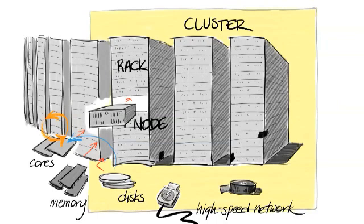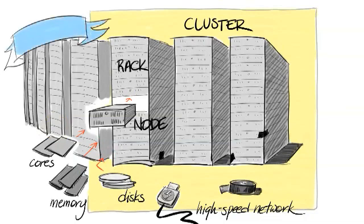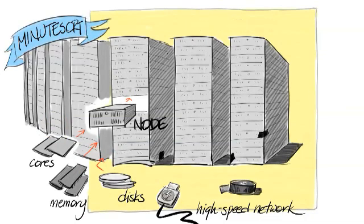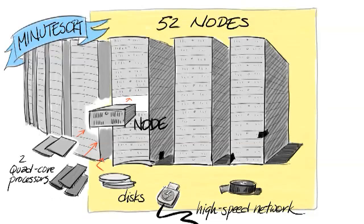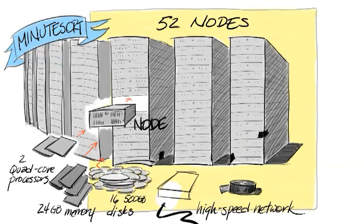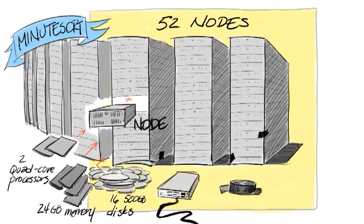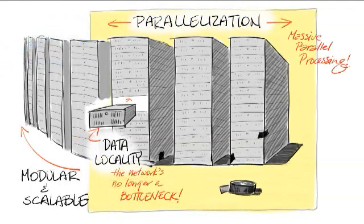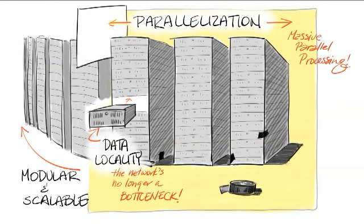Data gets transferred only from the local disk to the main memory. According to the University of California, San Diego, the Minute Sort record was broken with a cluster consisting of 52 nodes, each node with two quad-core processors, 24 GB memory, and 16 500 GB disks, all interconnected by a Cisco Nexus 5020 switch. Third, the parallelization of disk reads across the nodes may increase the number of IOPS while retaining the same hard disk drive costs.